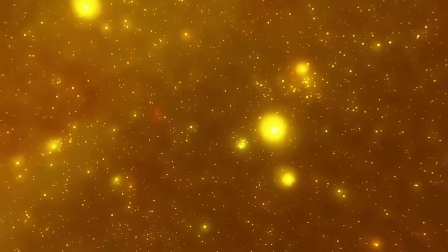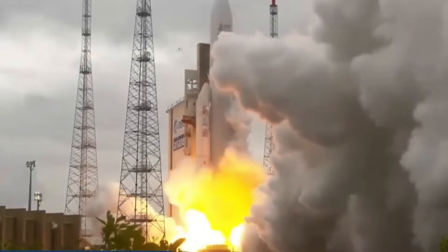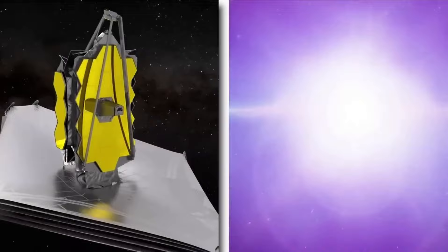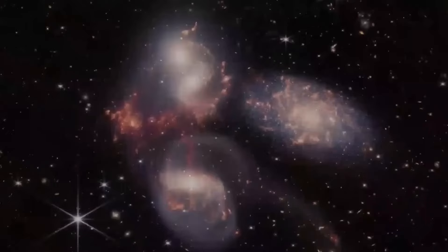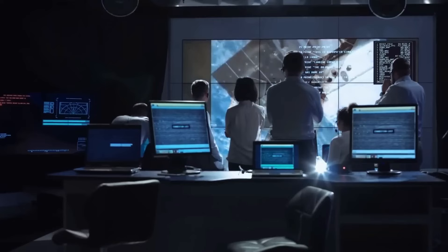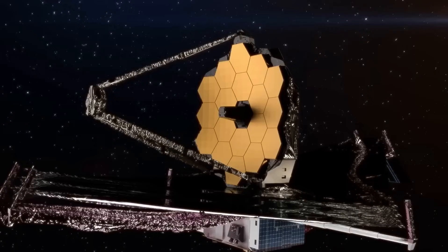After a month-long journey of nearly a million miles, the JWST reached its designated position in space known as L2, which is stable in terms of gravity and strategically located opposite to the Sun in relation to Earth's orbit. Many other space telescopes, like the Hubble Space Telescope and the Planck Space Observatory, have also chosen this spot for their missions.